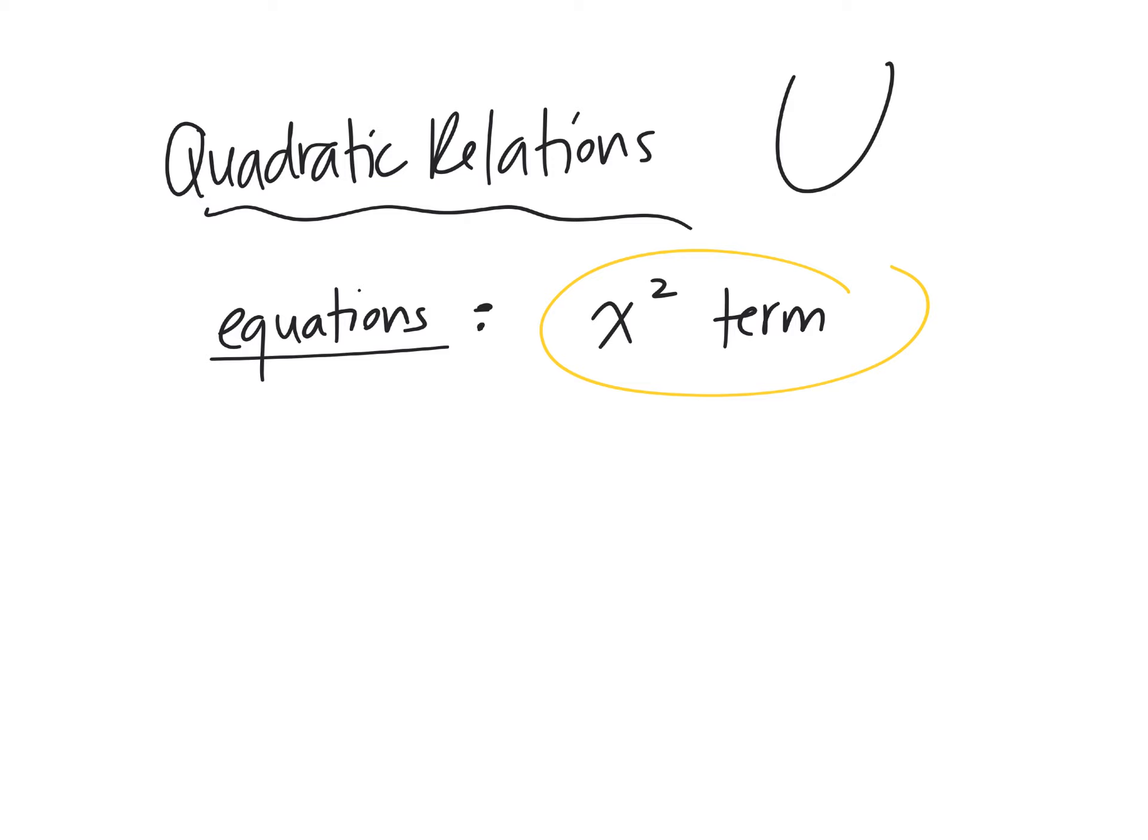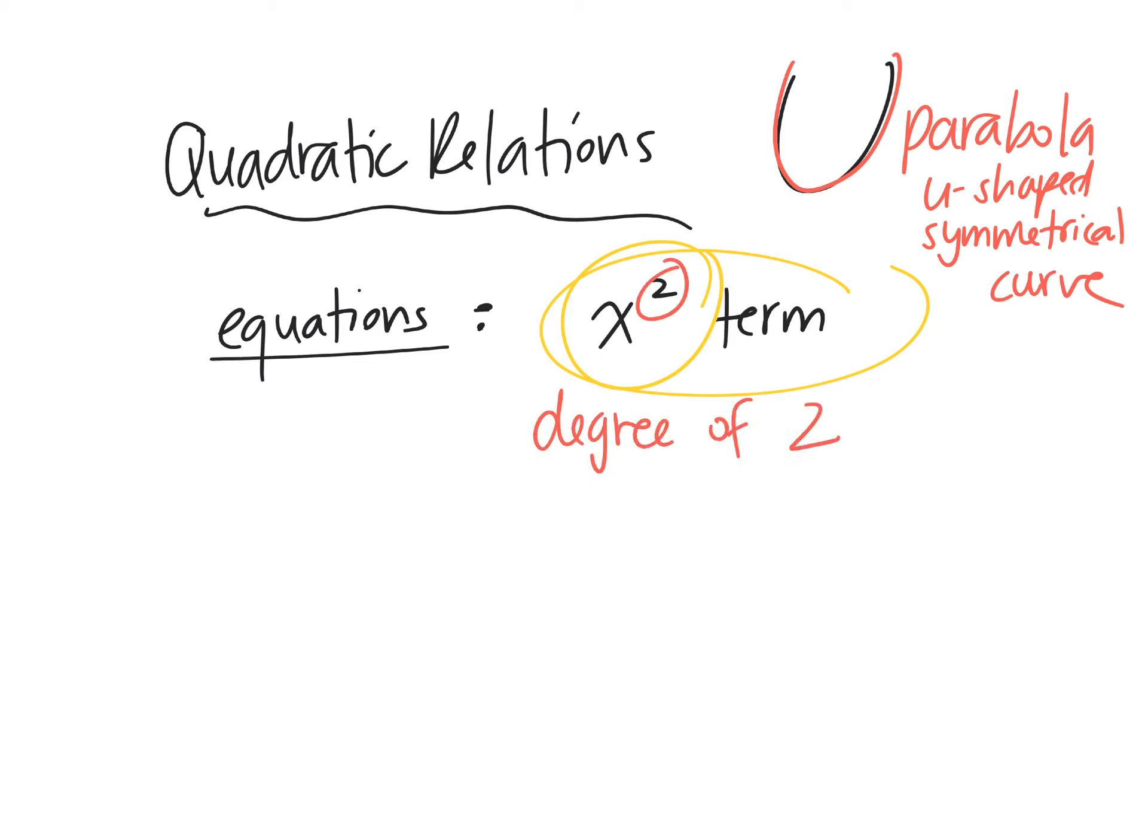When we looked at linear relations, they didn't have an x-squared term, they were straight lines. If it has an x-squared term, you automatically know it's going to be a parabola. It's going to be a U-shaped symmetrical curve. It has a degree of 2. That means that the largest exponent will always be a 2.